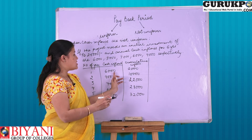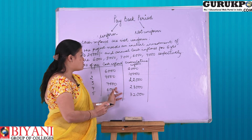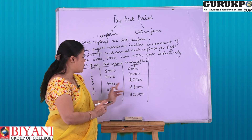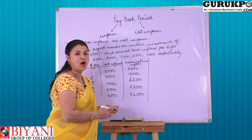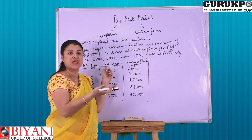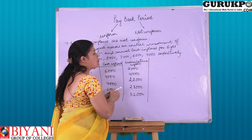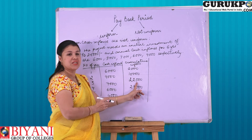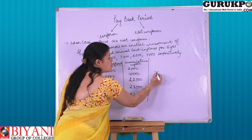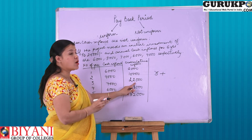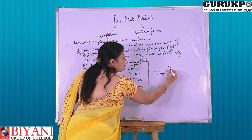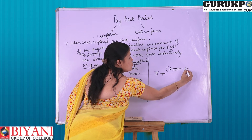We add: 6,000 plus 9,000 is 15,000; 15,000 plus 7,000 is 22,000; 22,000 plus 6,000 is 28,000; and lastly 28,000 plus 4,000 is 32,000. Now, as we know our initial investment is 25,000. From the cumulative cash inflow table it is clear that we recover 22,000 rupees by the third year. The remaining amount to recover is 25,000 minus 22,000, which is 3,000 rupees.